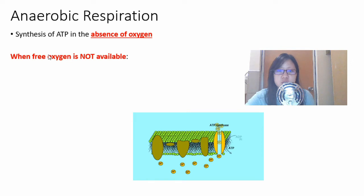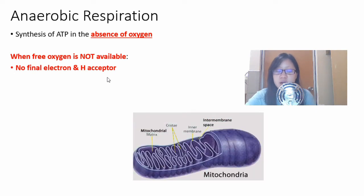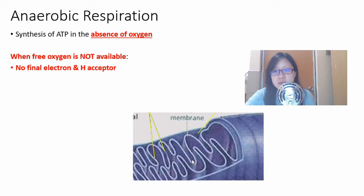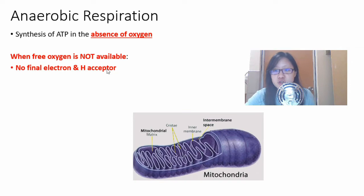So what happens in the absence of oxygen? Aerobic respiration cannot occur. Why? Because oxygen is the final electron and hydrogen acceptor in oxidative phosphorylation. This is stage 4 of aerobic respiration. If oxygen is not available as the final electron and hydrogen acceptor, then the electron transport chain stops. Once it stops, everything stops.